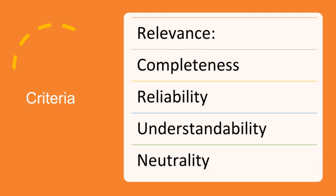Reliability: reliable criteria allow reasonably consistent evaluation or measurement of the subject matter, including presentation and disclosure, when used in similar circumstances by similarly qualified practitioners. Understandability: understandable criteria contribute to conclusions that are clear, comprehensive, and not subject to significantly different interpretations. The evaluation or measurement of a subject matter on the basis of the practitioner's own expectations, judgments, and individual experience would not constitute suitable criteria. Neutrality: neutral criteria contribute to conclusions that are free from bias.